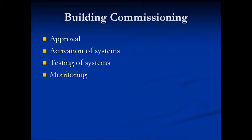Finally, we are looking at building commissioning — meaning has the building been constructed according to approved plans, and are all the various systems activated, tested, and monitored to ensure that they're working properly? These are the various things you have to consider in the process of how to construct a building. These are big-picture things, and there are other smaller things you would need to consider as well, but this is an overview of the basic process.